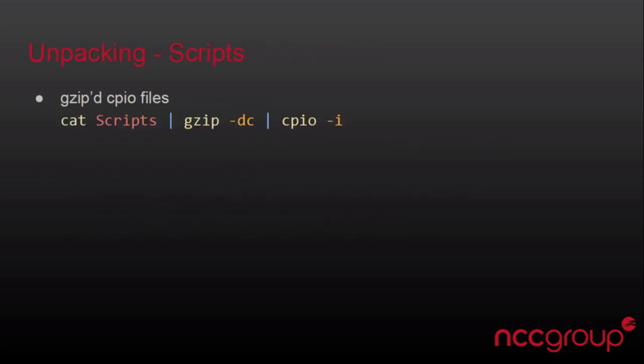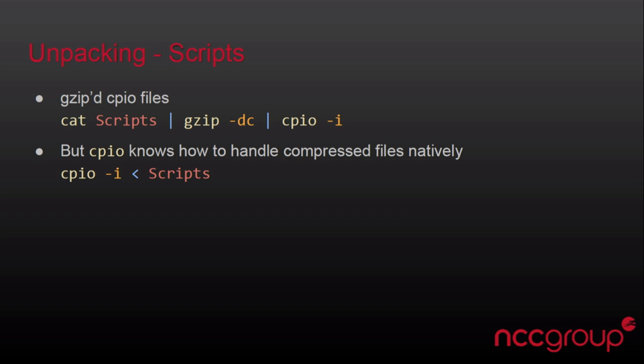To unpackage those archives within the package, since it's a GZIP CPIO file, you can cat the archive into the decompression and archive extraction, or CPIO actually natively detects that it's been GZIP compressed, so you can just put it right into CPIO as input and away you go. It'll dump right into the current directory, all the contents of that.